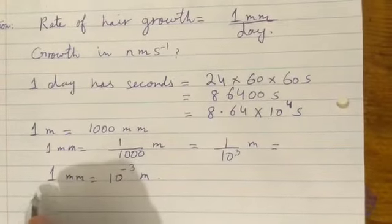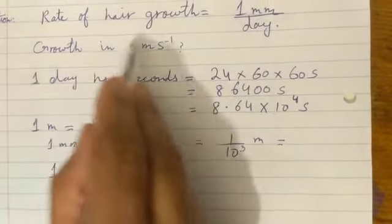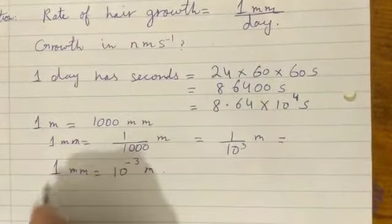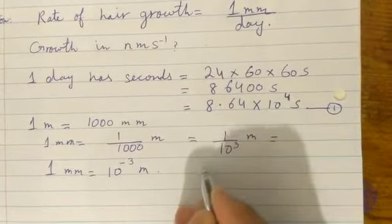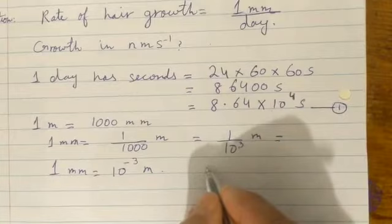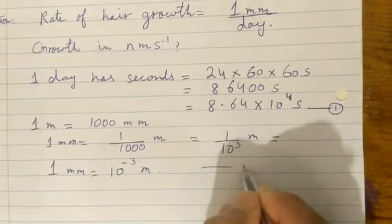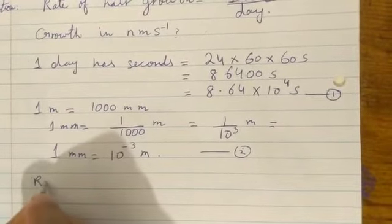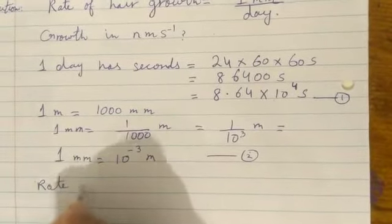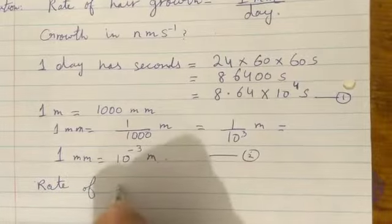Now we have the formula for the rate of growth. We have to put the values in this formula. This value is number one, and this value is number two. The rate of growth equals one millimeter divided by time in seconds.